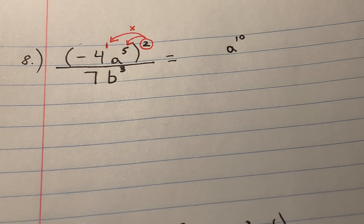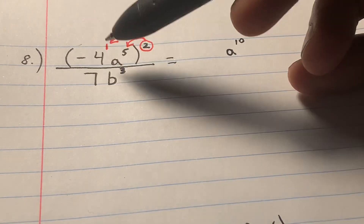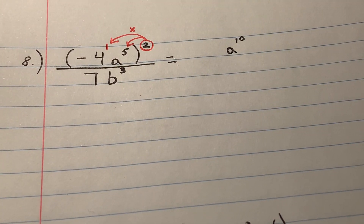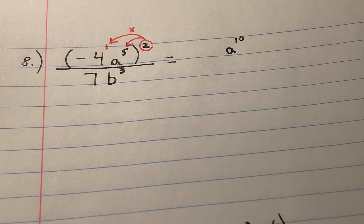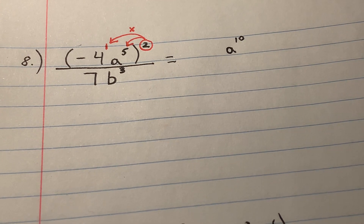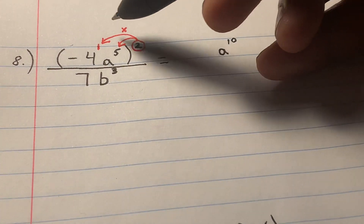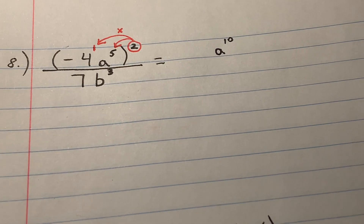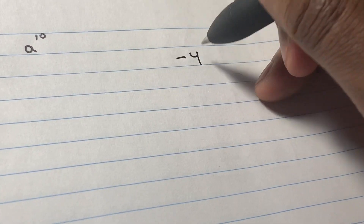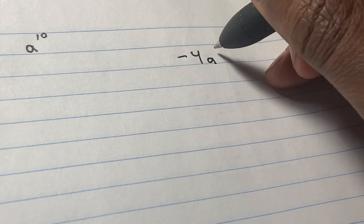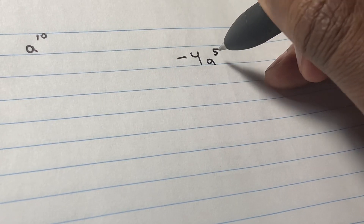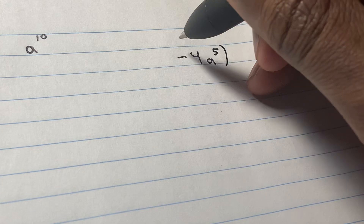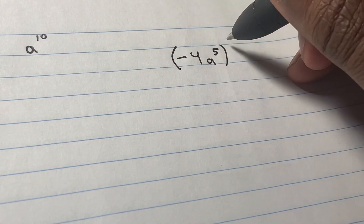As I always say, when in doubt, work it out. I'm going to take the numerator and rewrite it off on the side. I'll write negative four a to the fifth power in parentheses raised to the second power.